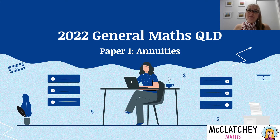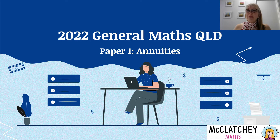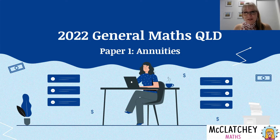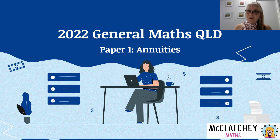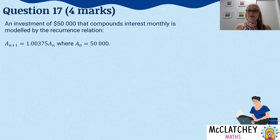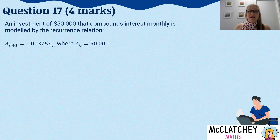Hi, welcome back to McClatchy Maths. My name is Natalie McClatchy and today we are looking at 2022's General Maths exam in Queensland, Australia, with a focus on Paper 1, which was our short answer questions for annuities. And if you are anywhere else in the world or the country, do not worry — if you're studying annuities, this video could help you as well. Let's get straight into it with our first short answer question worth four marks, question 17.